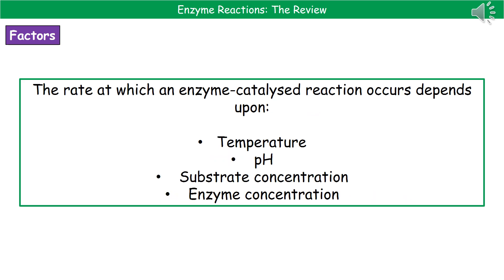There are four key factors you need to know regarding how they affect the rate at which an enzyme-catalyzed reaction will occur. Those factors are: temperature, pH, the concentration of the substrate, and the concentration of the enzyme.